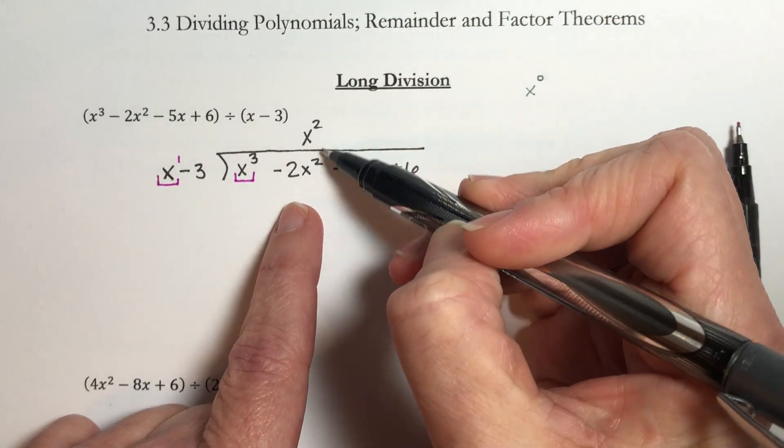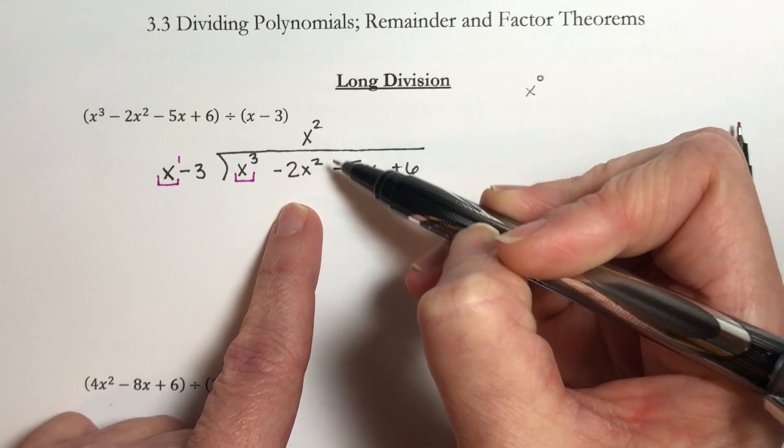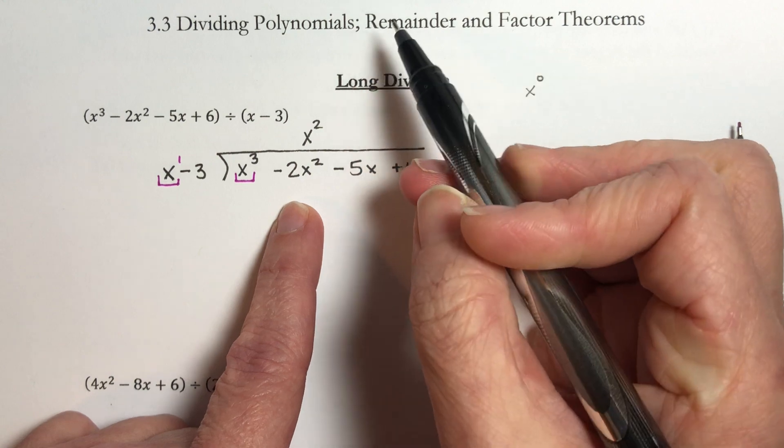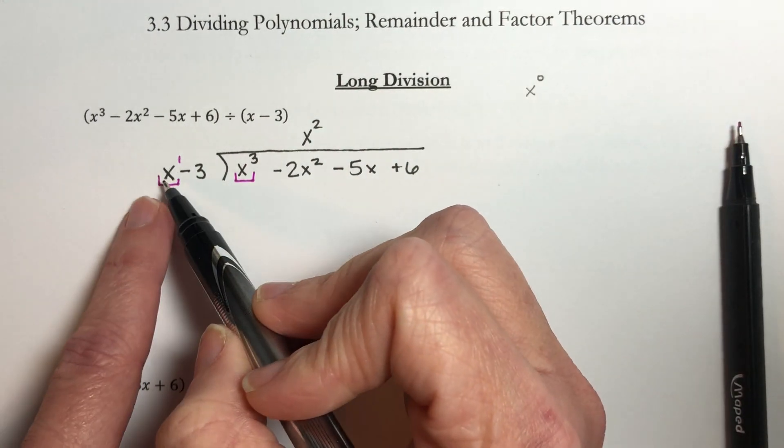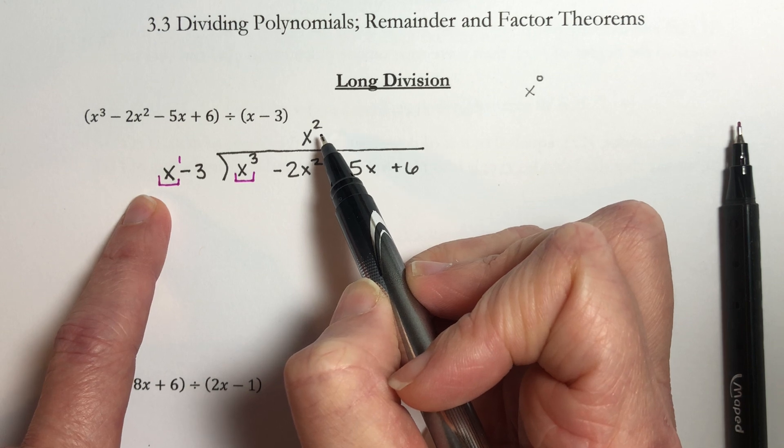It's not absolutely necessary but it will help you out if you line up your like terms here. It will help you figure out when you are done. So in order to change this x into an x cubed I need to multiply it by an x squared.